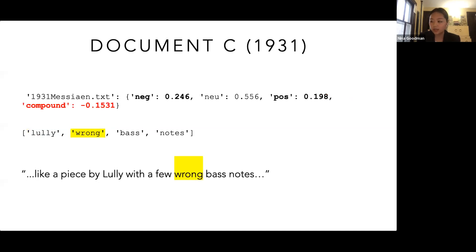Document C is located close to the line y equals x, but the high negative score indicates it should be more closely reviewed. Using targeted text analysis, we can see that like Document A, this review compares Lully's style to Apollo. The comparison is made using the term 'wrong,' which is probably the reason for the high negative score. But Messiaen uses the term more as an observation of Stravinsky's neoclassical style — his works often being called 'wrong note' music — rather than as a derogatory remark.